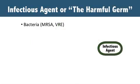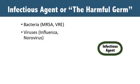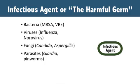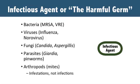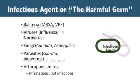The infectious agent is any harmful germ that causes disease. In Module 1, you learned about antibiotic-resistant bacteria like MRSA, but there are other harmful germs that also cause infection. There are viruses like flu and norovirus, fungi like Candida, parasites like Giardia, and arthropods like scabies or mites. All of these can cause illness and infections in nursing homes.